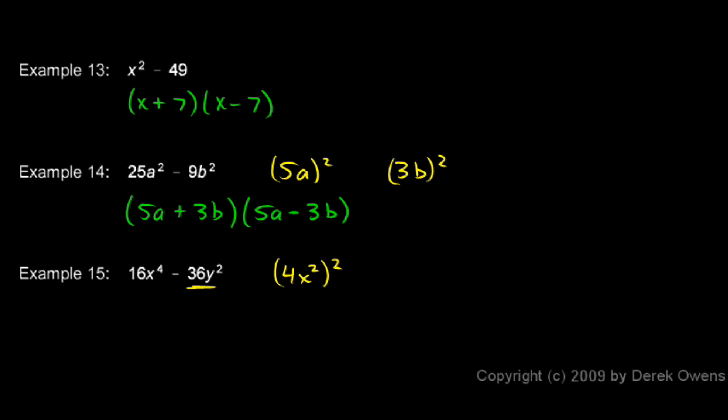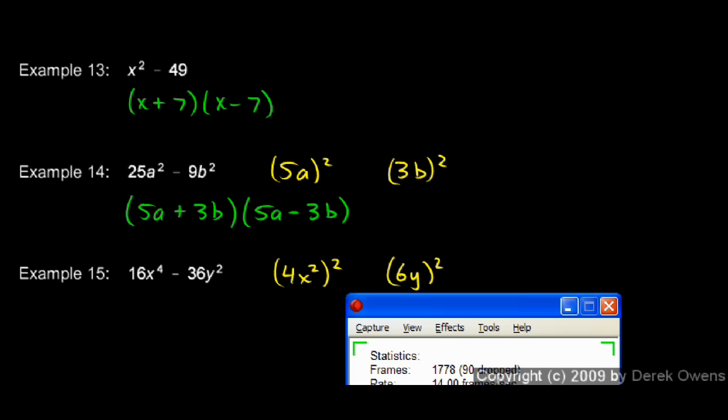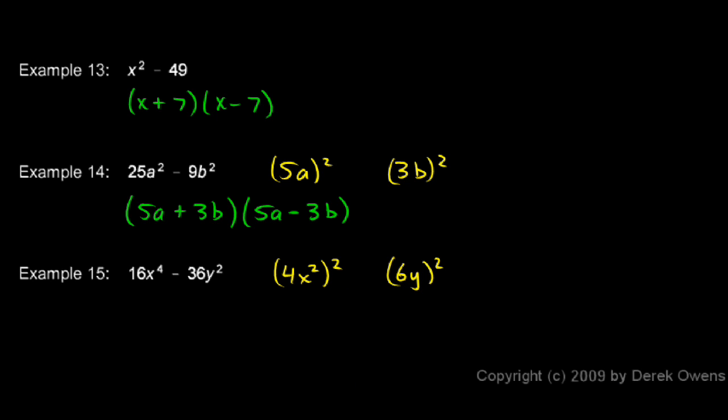And then the 36y², you should see that that's equal to (6y)². So I have one thing squared minus another thing squared, which means I can write my answer as (4x² + 6y)(4x² - 6y). And again, you could check your work by doing a first, outer, inner, last multiplication.